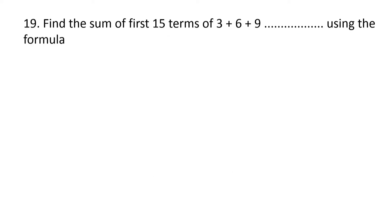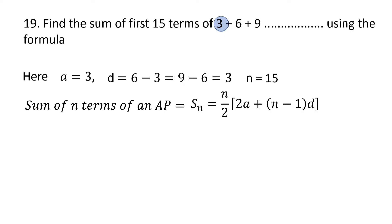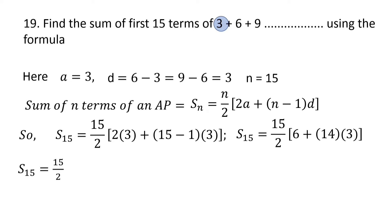The 19th question is: find the sum of the first 15 terms of 3 plus 6 plus 9, ... using the formula. Here the first term a equals 3, d equals 6 minus 3, that is 3, and n equals 15 because we have to find the sum of first 15 terms. The sum of n terms of an AP is S_n equals n by 2 into (2a plus (n minus 1) into d). So S15 equals 15 by 2 into (2 into 3 plus 14 into 3), which gives 15 by 2 into (6 plus 42).